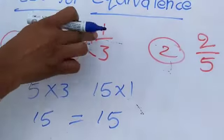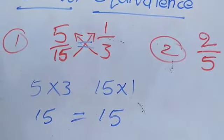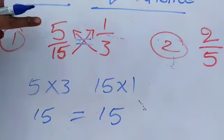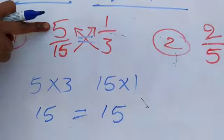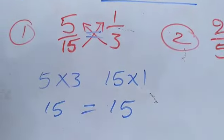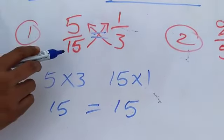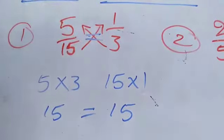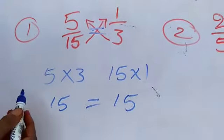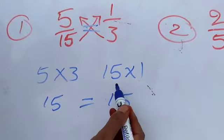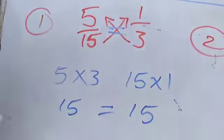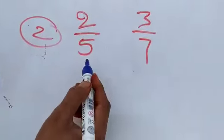5 by 15 and 1 by 3 — are they equivalent fractions? Using cross multiplication: first numerator multiplied with second denominator gives 5 × 3 = 15. First denominator multiplied with second numerator gives 15 × 1 = 15. These two are equal, so these are equivalent fractions.